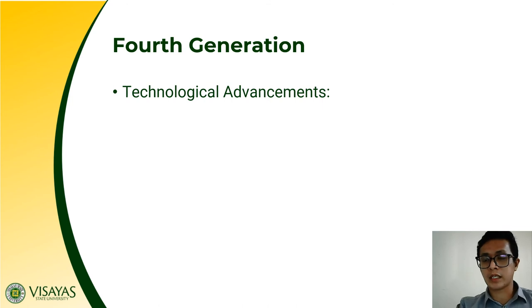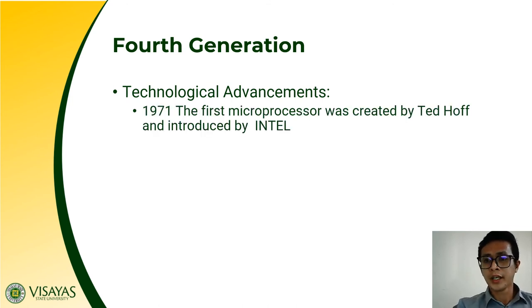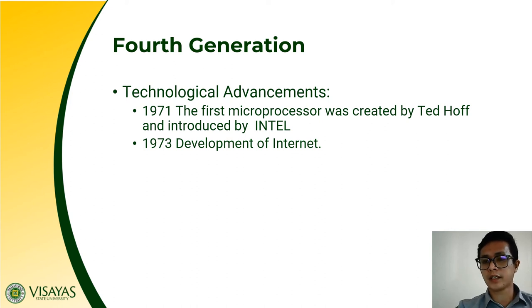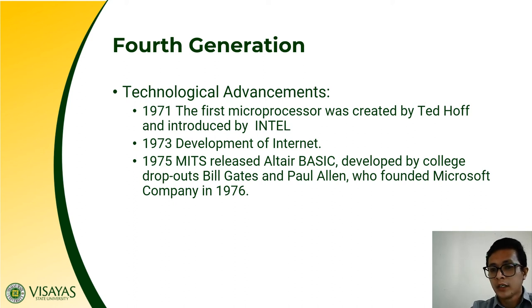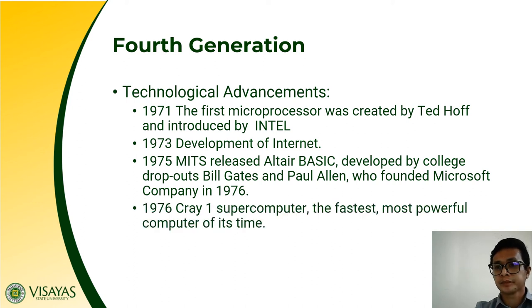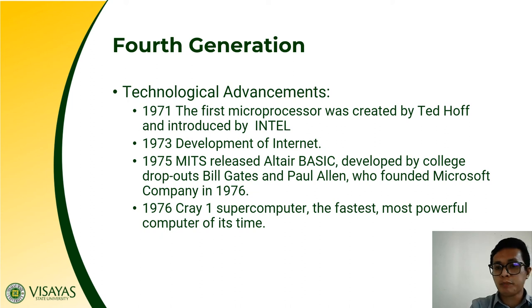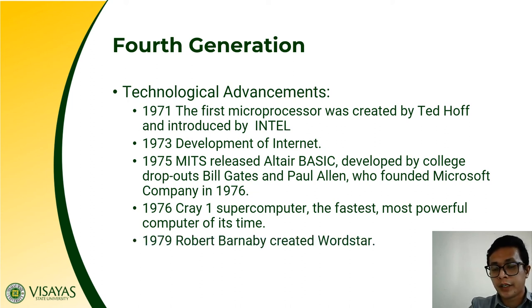Here are some technological advancements in the fourth generation of computers. In 1971, the first microprocessor was developed by Ted Hoff and introduced by Intel. In 1973, the development of the internet began, and the father of the internet is Vint Cerf. In 1975, MITS released Altair BASIC, developed by college dropouts Bill Gates and Paul Allen, who then founded Microsoft in 1976. In the same year, the Cray-1 supercomputer — the fastest and most powerful computer of its time — was developed. In 1979, WordStar was created by Robert Barnaby, the forerunner of Microsoft Word.